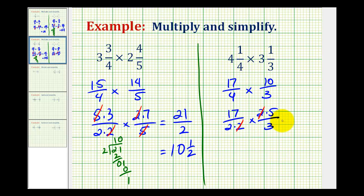So now we can multiply. The numerator is going to be seventeen times five, which is eighty-five. The denominator is two times three, which is equal to six.